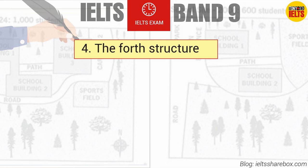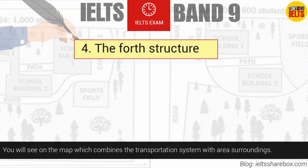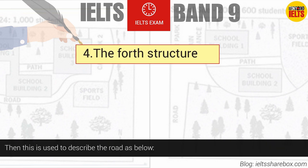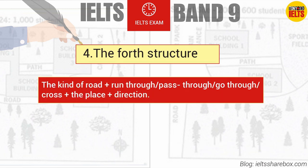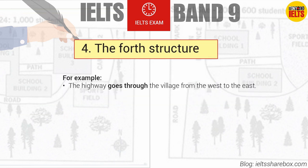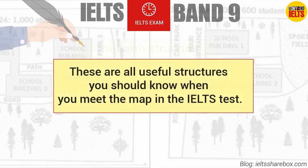The fourth structure applies when the map combines a transportation system with area surroundings. It is used to describe roads. For example: 'The highway goes through the village from the west to the east.' These are all useful structures you should know when you encounter a map question in the IELTS test.